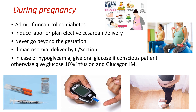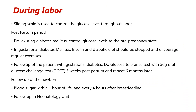Once the baby grows more than the normal size, it will be difficult to deliver normally and can lead to complications, so your doctor may order a cesarean section. In case of hypoglycemia — if you are taking oral hypoglycemic agents or insulin — you may have hypoglycemic episodes; your doctor may give oral glucose, a glucose infusion, or an IM injection of glucagon, depending on your condition. During labor, a sliding scale is used to control glucose levels — that is, the amount of insulin injected is decided according to the blood sugar level.